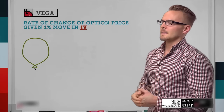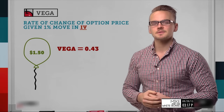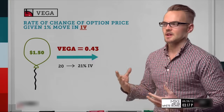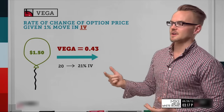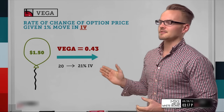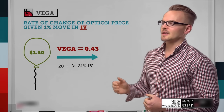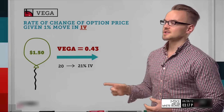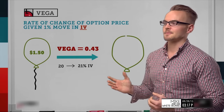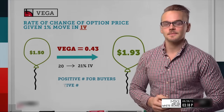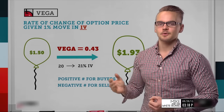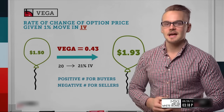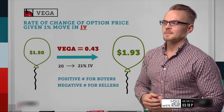To illustrate Vega, I'm going to use a balloon, because on the show we talk about inflation and deflation of implied volatility — expansion and deflation — and it helps to think about it visually. So we've got a $1.50 option inside the balloon. With a Vega of 0.43, if implied volatility goes up one percent from 20 to 21, that balloon expands, and the option price increases by 43 cents, giving us a new price of $1.93.